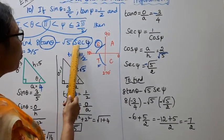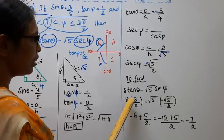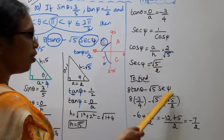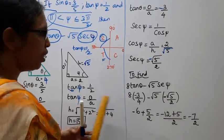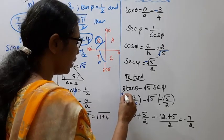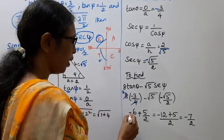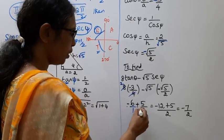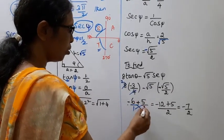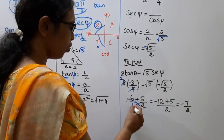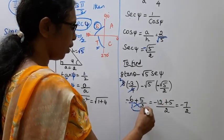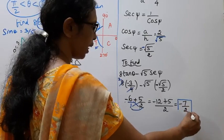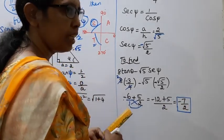Now calculate 8 tan θ minus root 5 times sec φ: 8 times (minus 3 by 4) minus root 5 times (minus root 5 by 2). That gives 2 times minus 3 = minus 6, and minus times minus root 5 into root 5 = plus 5 by 2. Cross multiplying: 2 times minus 6 = minus 12, plus 5, over 2 = minus 7 by 2. The final answer is minus 7 by 2.